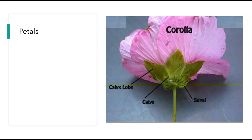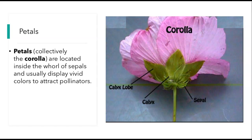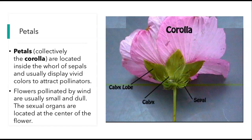Then the petals — pretty self-explanatory. They're collectively called the corolla, and they're located inside the whorl of sepals. They usually display vivid colors to attract pollinators. Flowers that are pollinated by wind are usually small and dull because there's no need to attract pollinators.